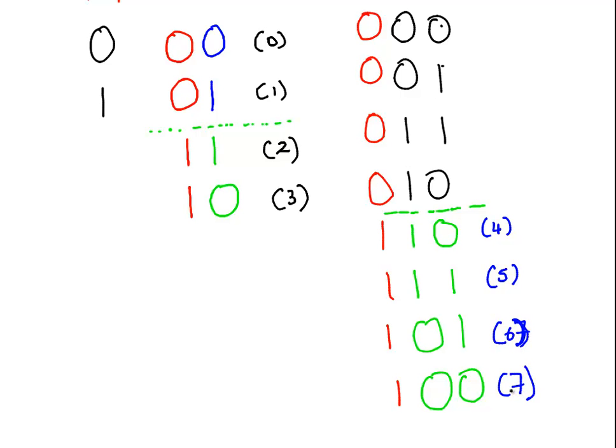The grey code numbers continue on in that same sort of format. You can do n equals 4, get the 16 bits, decimal 0 to 15, and so on.